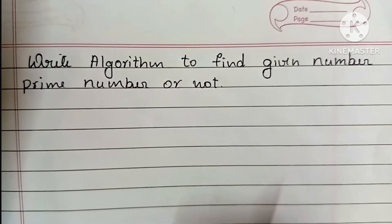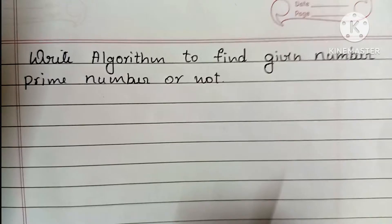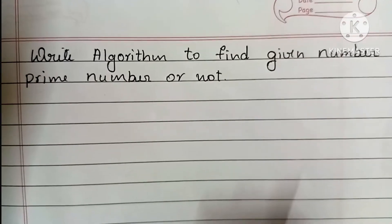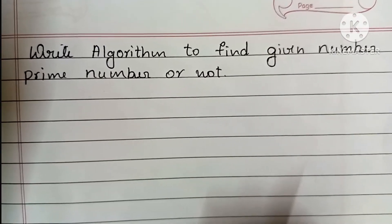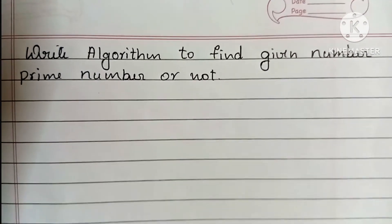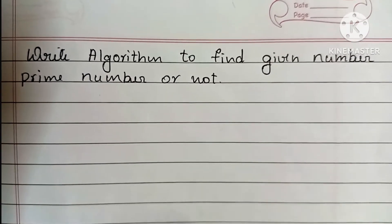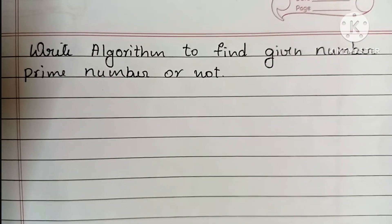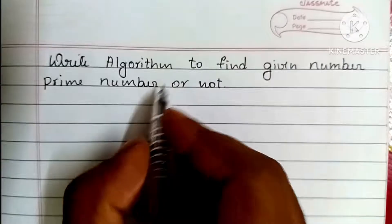In this video we are going to learn how to write an algorithm to find whether a given number is a prime number or not. A prime number is a positive integer which is divisible by one and itself only, meaning it gives a remainder of zero only when divided by one and itself.